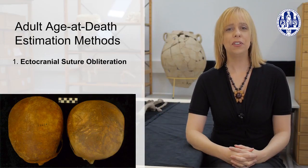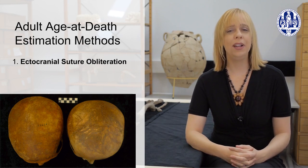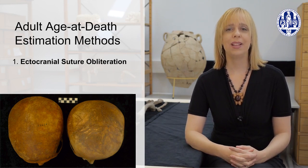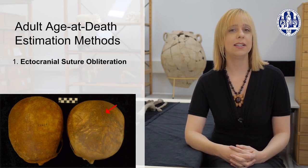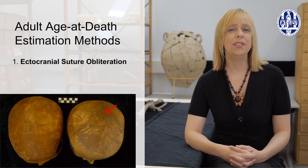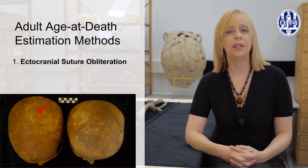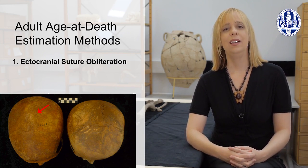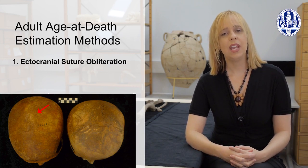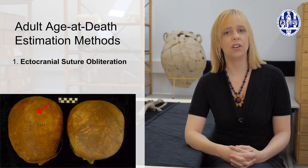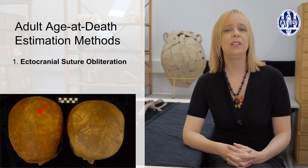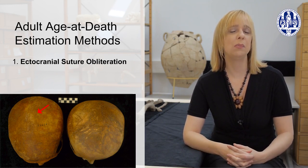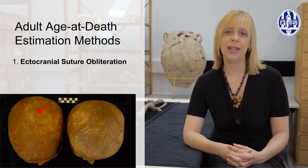For the first method, we use the cranium — specifically the cranial sutures. As you get older, the suture lines, seen here as a bit open and distinct, begin to close, and the suture line starts to be obliterated or lost. The method we will show you today is based on the age of suture obliteration on the exterior side of the skull, called the ectocranial surface. By old adulthood, the cranial vault may look like it consists of one single bone, while in fact we know it is composed of many.